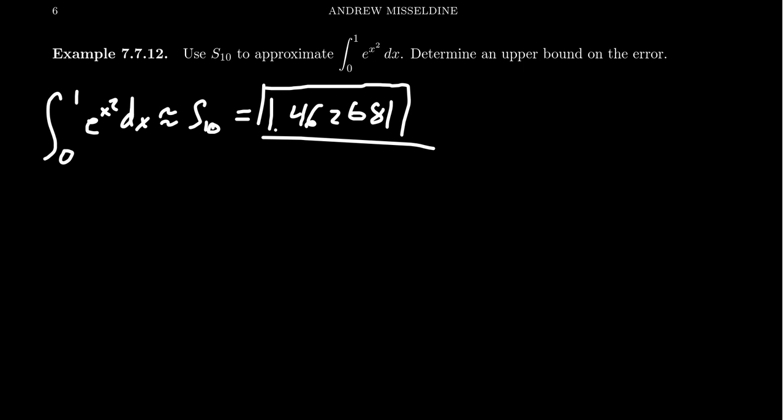It's not just good enough to have the estimate. We have to know how good of an estimate it is. So how bad is the error in the situation? Well, like we saw before, the error associated with Simpson's rule is bounded above by k times b minus a to the fifth over 180 n to the fourth.